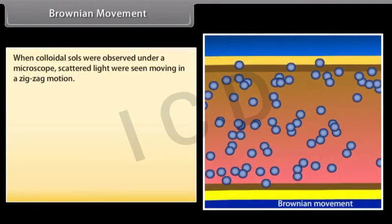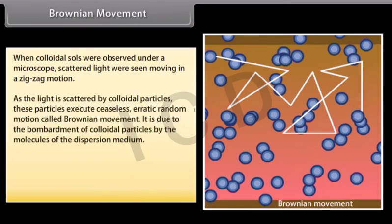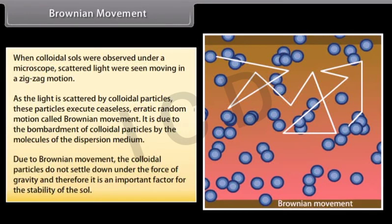When colloidal sols are observed under a microscope, scattered light spots are seen moving in a zigzag motion. As light is scattered by colloidal particles, these particles execute ceaseless, erratic random motion called Brownian movement. It is due to the bombardment of colloidal particles by the molecules of the dispersion medium. Due to Brownian movement, colloidal particles do not settle down under the force of gravity, and therefore it is an important factor for the stability of the sol.